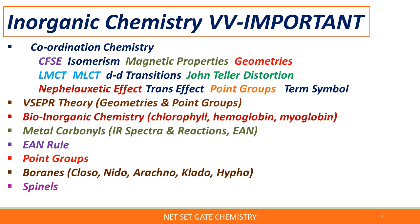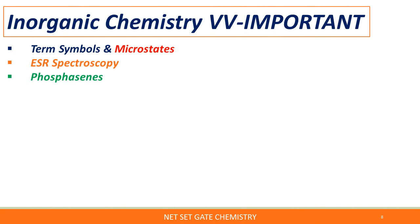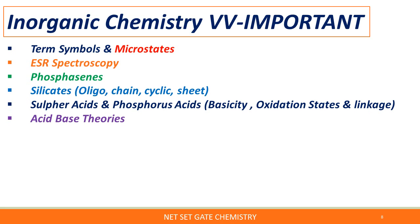Boranes are asked in each exam — in the previous two to three years, frequently two mark questions on boranes were asked. On spinels also, frequently one or two MCQs are there, so try to focus on these two topics. Also cover term symbols and microstates, ESR spectroscopy in inorganic chemistry, phosphazines, and silicates — including oligomeric, chain, cyclic, and sheet silicates, and their formulas asked in GATE or CSIR NET.